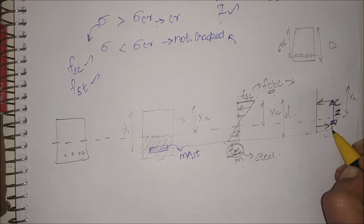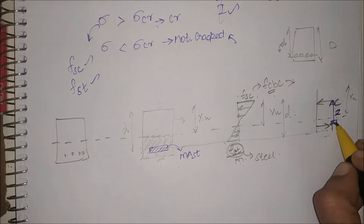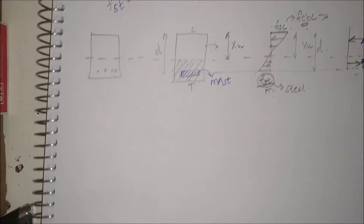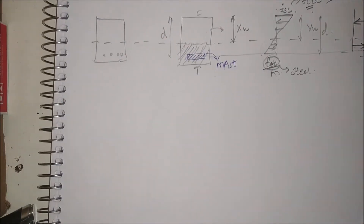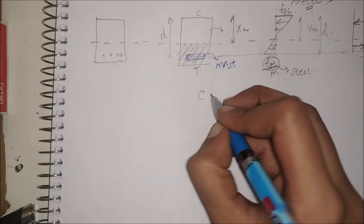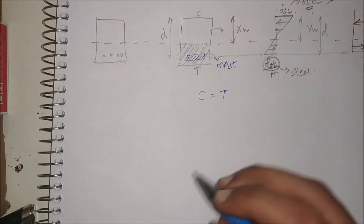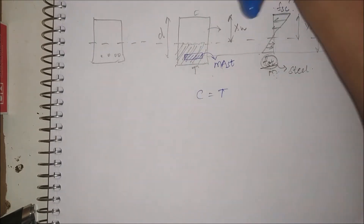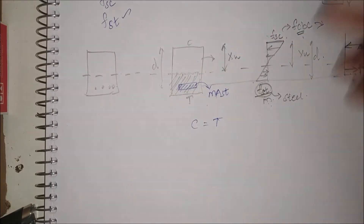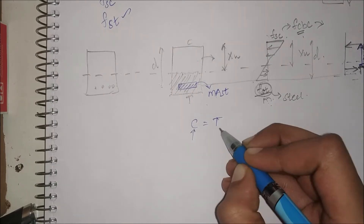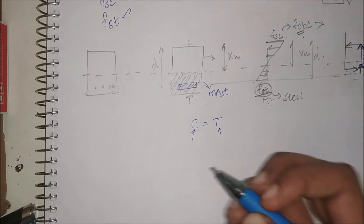From the force diagram you can see that C and T are the only two forces that exist. Therefore, by the law of equilibrium, C should be equal to T. Now we are going to find the forces C and T.